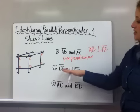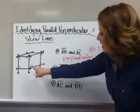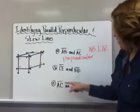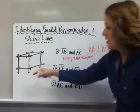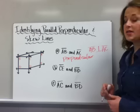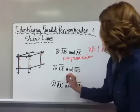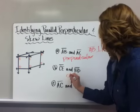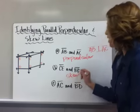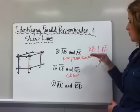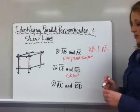For practice B here, CE and BD. CE is running across the top and BD is running down here. They are never going to intersect, however, they are not parallel, so they are skew.